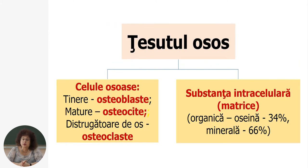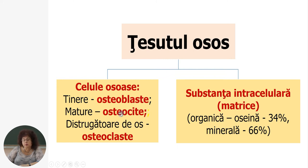Oasele sunt alcătuite din țesutul osos, care face parte din țesuturi conjunctive. Țesutul osos include celule osoase și substanța intracelulară matrice. Celulele osoase sunt de trei tipuri: tinere, numite osteoblaste; mature, osteocite; și distrugătoare de os, osteoclaste. Substanța intracelulară sau matrice include substanță organică numită oseina, care constituie 34%, și substanța minerală, 66%.